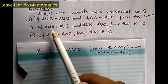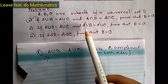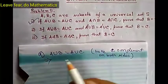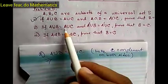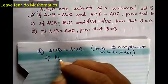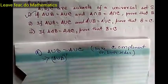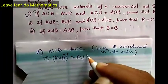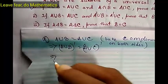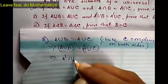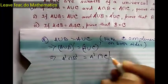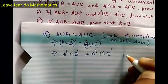Now let us prove the second problem. The problem is: if A union B equals A union C and A complement union B equals A complement union C, then prove that B equals C. From the condition A union B equals A union C, take complement on both sides: (A union B) complement equals (A union C) complement. Apply De Morgan's law: A complement intersection B complement equals A complement intersection C complement. This is our statement (relation 1).